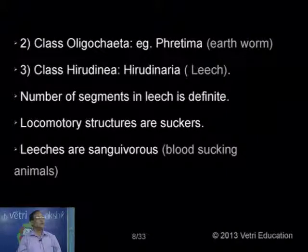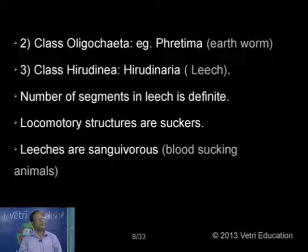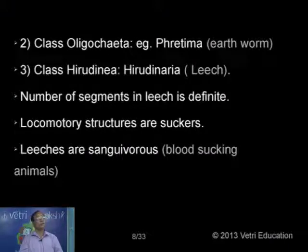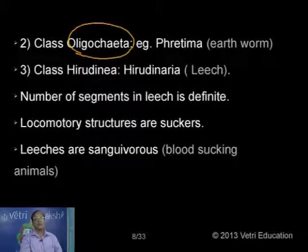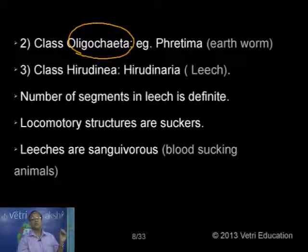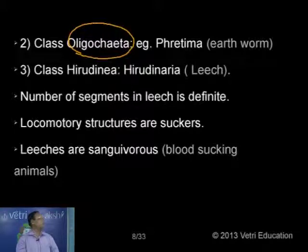Class number two — Oligochaeta. The common example is Pheretima posthuma, the earthworm. The animals have only body setae for movement.